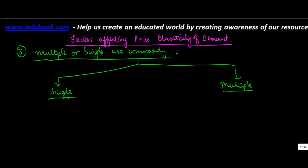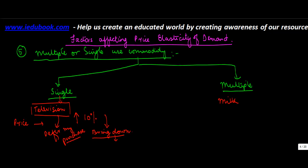Let's take one example of each. Single use: let's say a television. Multiple use: let's say milk. Let's say the price of television increases by ten percent. This increase in ten percent is likely to bring down the quantity demanded significantly. Why? Because this thing can be used only for one purpose, so the person may say let me defer my purchase.